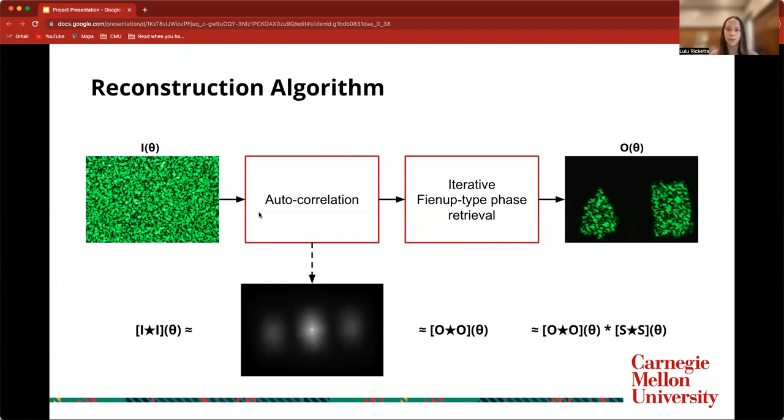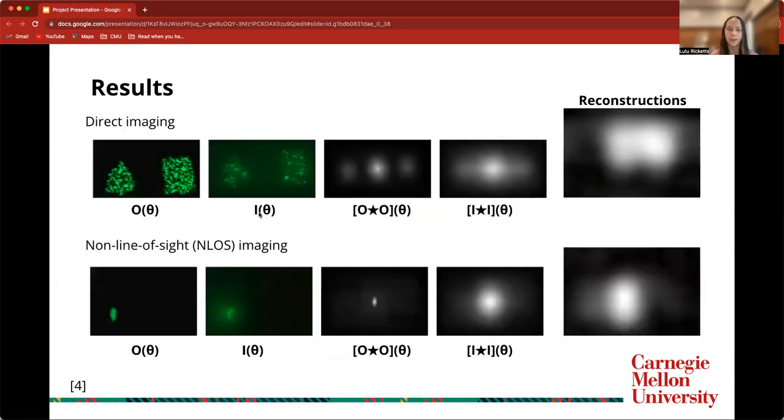Phase retrieval was ran with multiple beta values, which is a constant in the algorithm. And I used the ones that yielded the best reconstruction results, which are shown here. So both of the imaging setups were tested on two different objects, the triangle and the square one, and also the one with the oval in it. And here I'm just showing the best results for each case.